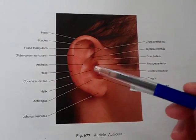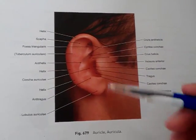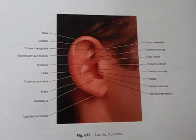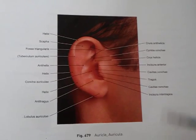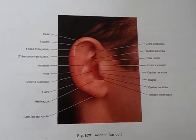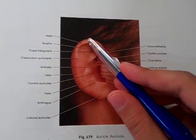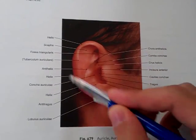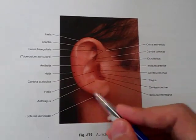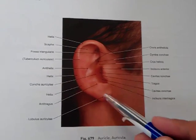The skin contains numerous sebaceous glands in the concha. It has a prominent rim called the helix, that inferiorly goes into the lobulus. There is no cartilage in the lobulus.